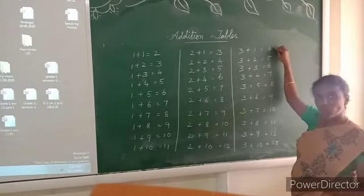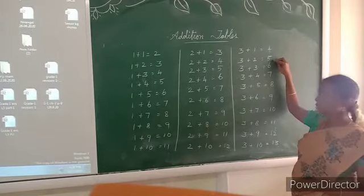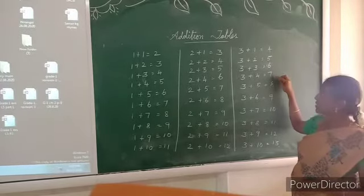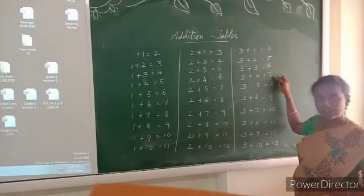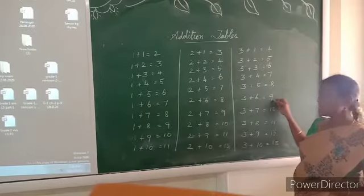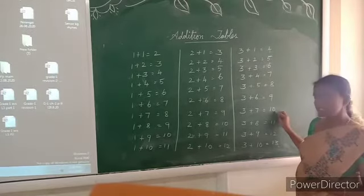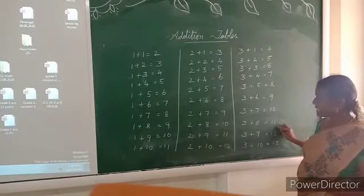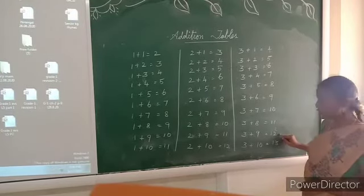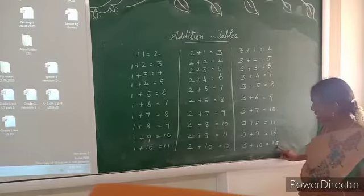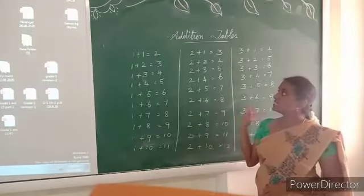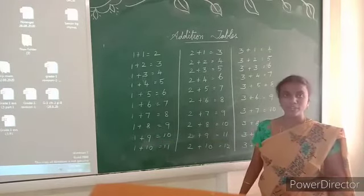3 plus 1 is equal to 4. 3 plus 2 is equal to 5. 3 plus 3 is equal to 6. 3 plus 4 is equal to 7. 3 plus 5 is equal to 8. 3 plus 6 is equal to 9. 3 plus 7 is equal to 10. 3 plus 8 is equal to 11. 3 plus 9 is equal to 12. 3 plus 10 is equal to 13. Okay children, you have to practice this addition table in your room.